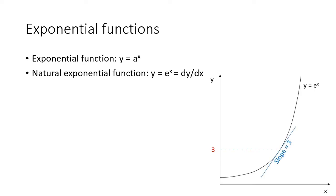Let's start with exponential functions. An exponential function is one where the output, y, is equal to a constant, a, raised to the power of the input, x. A natural exponential function is one where the output, y, is equal to Euler's number, e, raised to the power of the input.